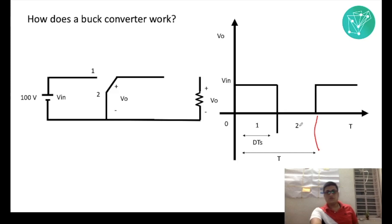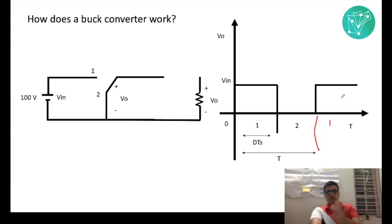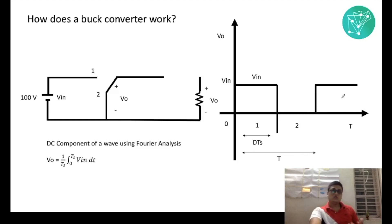This completes one full time cycle. In the next part, when the switch connects to position 1 again, you would get V input as the output. Now, according to Fourier analysis, the DC component of a wave can be found by integrating the output voltage measured for a particular time interval and dividing it by that time interval.